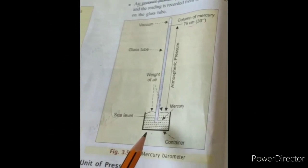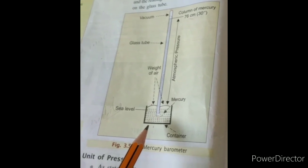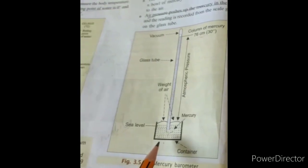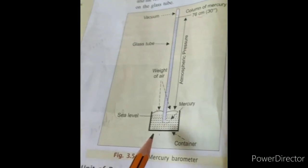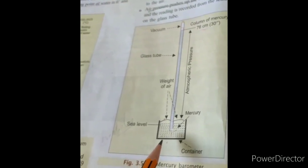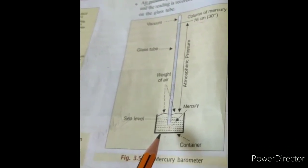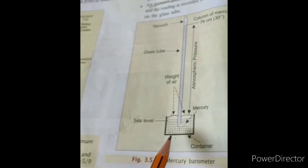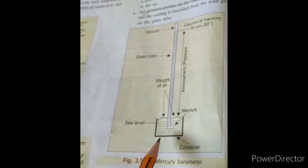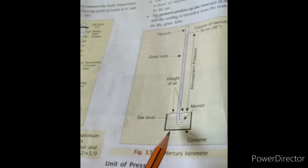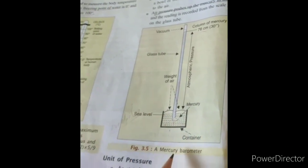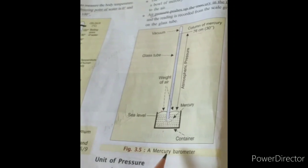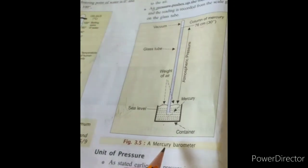The next topic is atmospheric pressure. Atmospheric pressure is defined as the force exerted by the vertical columns of air per unit area. Atmospheric pressure is measured by a barometer, which was invented by Galileo and his assistant Torricelli.